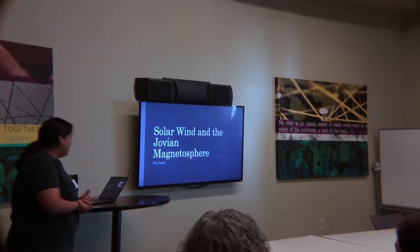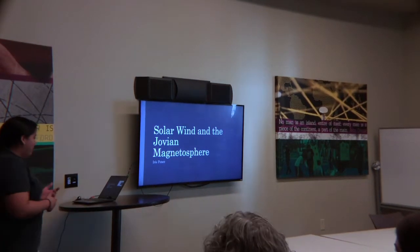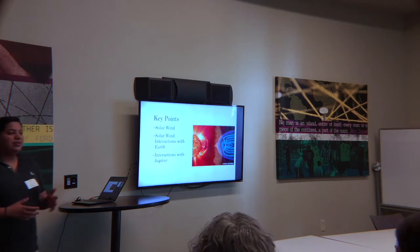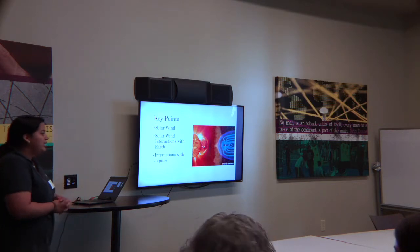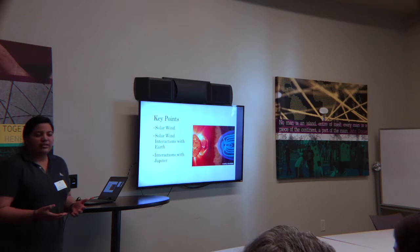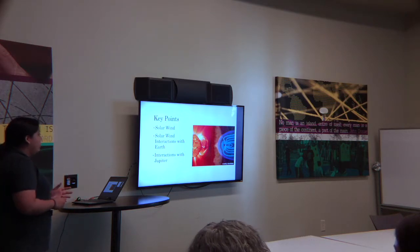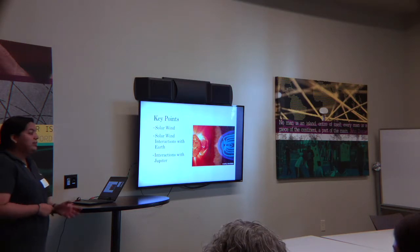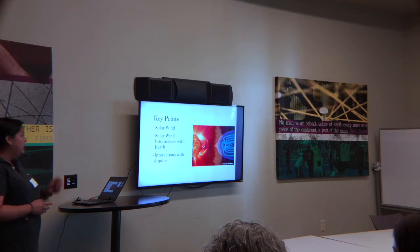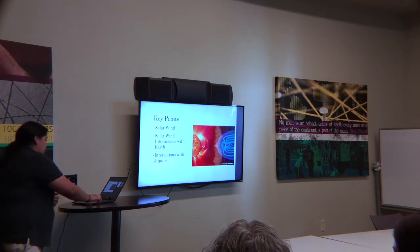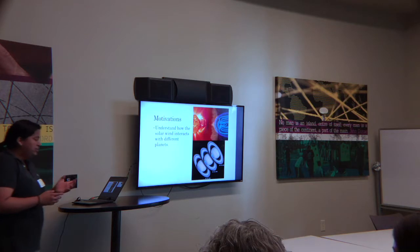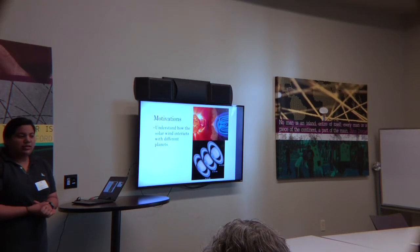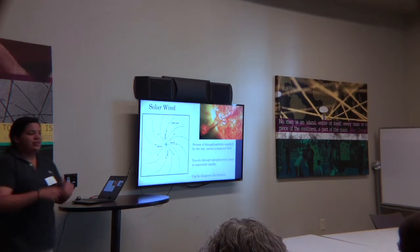So today I'll talk about solar wind and the Jovian magnetosphere. But before we can understand what that even means, there are a few concepts that we have to explain. And the first being, what exactly is solar wind? So I'll do this so that then we can understand how solar wind interacts with Earth, and then from there I'll deviate a little bit and explain my work, which is how the solar wind interacts with Jupiter.